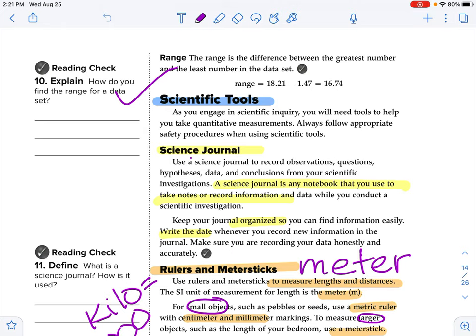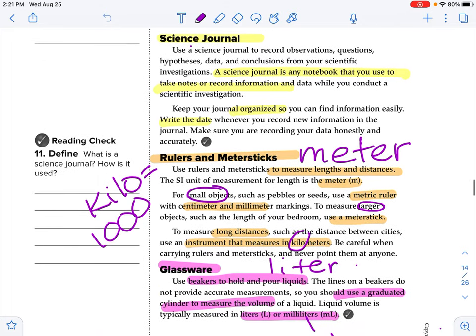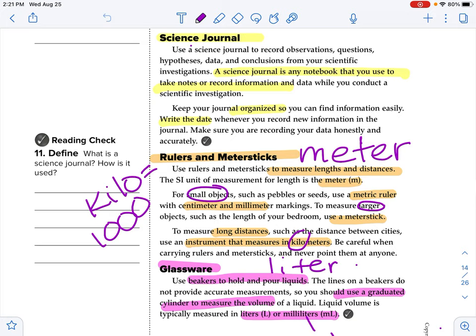Keep your journal organized so you can find information easily. Write the date whenever you record new information in the journal. Make sure you are recording your data honestly and accurately. So whether this is a paper journal like a spiral notebook or a paper just in a binder, or whether that be a Word document on the computer, but just someplace that you are recording your findings and you have to record it honestly and accurately. So the second one we have is a ruler and a meter stick. So we use rulers and meter sticks to measure lengths and distances. The SI unit of measurement for length is the meter. So rulers and meter sticks measure in meters. Now we here in the United States, the U.S. customary, we've got inches and feet and yards and miles. But in the metric system, it's all based on a meter.